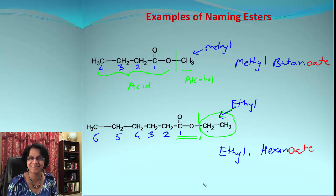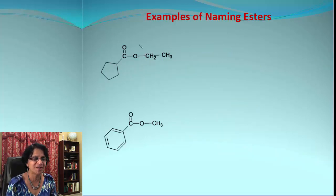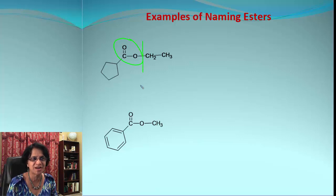The name becomes ethyl hexanoate — pretty simple, right? Let's work on some cyclic compounds now. This tells us that we got an ester there, and the breakage point is right over here.